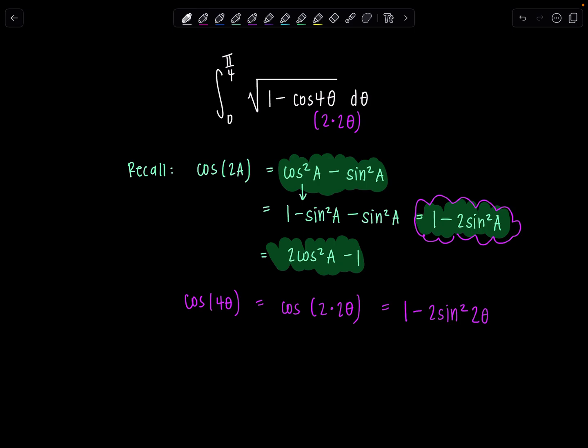So, now let's go back, rewrite our integral. Keep those limits there. So, we have 0 to π/4 square root 1 minus, and then now I'm going to replace cosine 4θ with 1 minus 2sin²2θ dθ. How are we doing? Good?